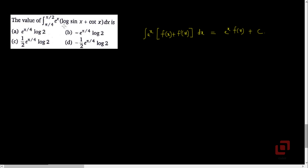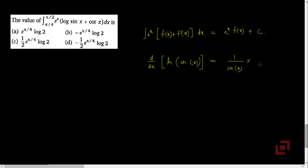If we go back to the integrand here, it has e^x and in the bracket it has the functions cot(x) and log of sin(x). Let us quickly find the derivative of log of sin(x). By chain rule, this derivative will be 1 upon sin(x), which is the derivative of the outer function log, into the derivative of the inner function sin(x), so it will be cos(x).